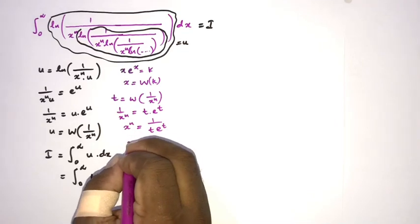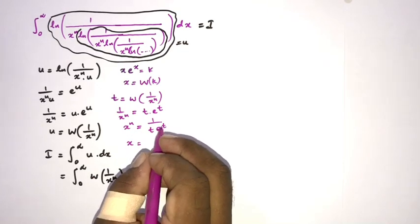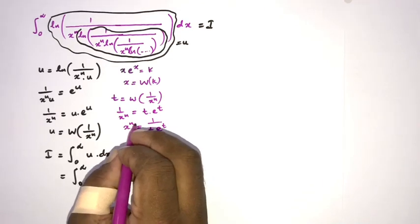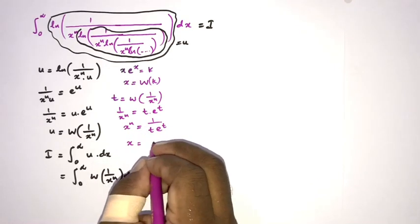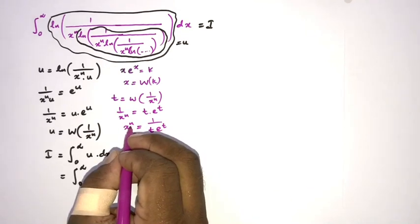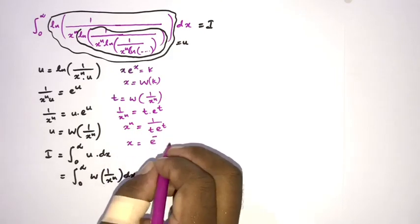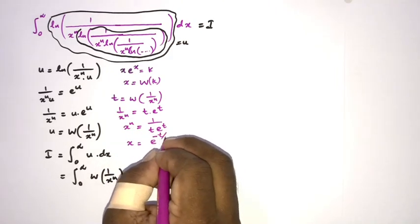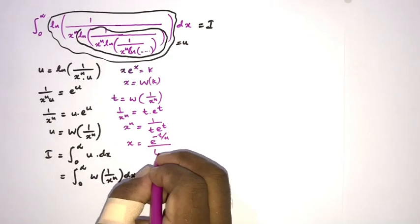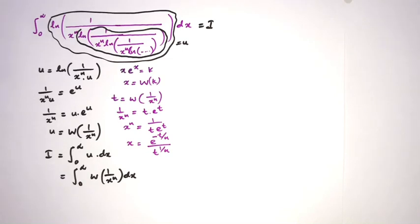Then x equals e to the t moved to the numerator, so e to the minus t, raised to the 1 over n power. Isolating x gives x equal to e to the minus t over n divided by t to the 1 over n.